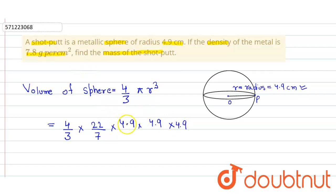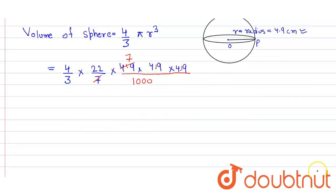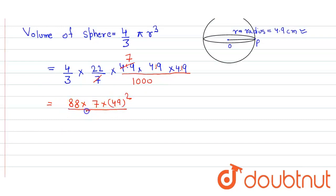This point will give in the denominator 1000 with all the zeros. And this 7 will cancel here by 7. So ultimately we simply get 88 into 7 into 49 squared upon 3000 centimeter cube.